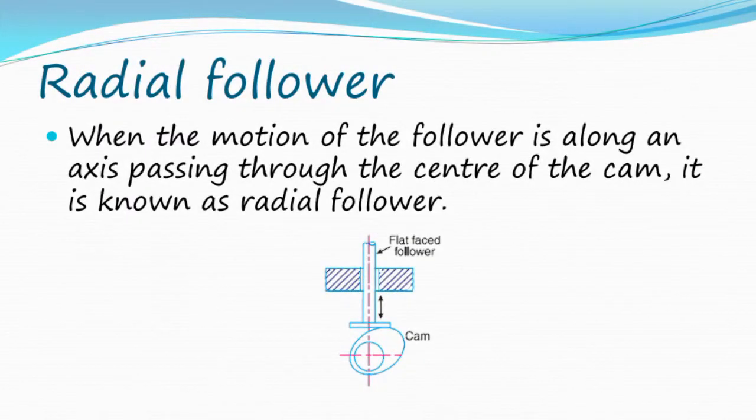Radial follower: When the motion of the follower is along an axis passing through the center of the cam, it is known as radial follower.